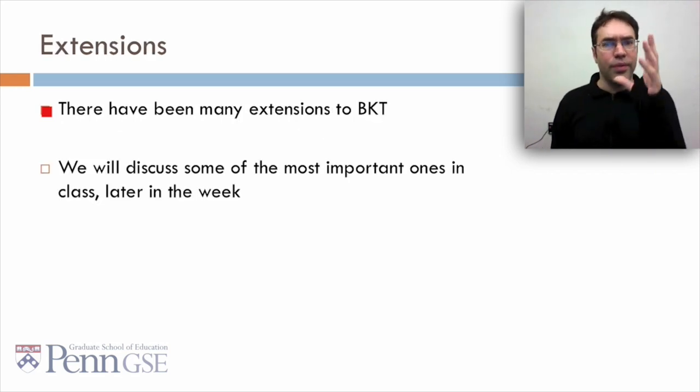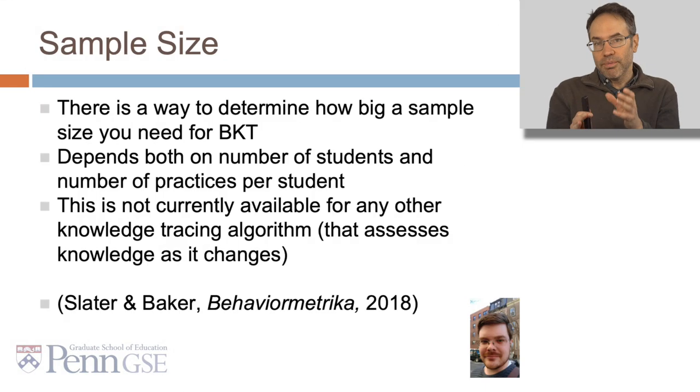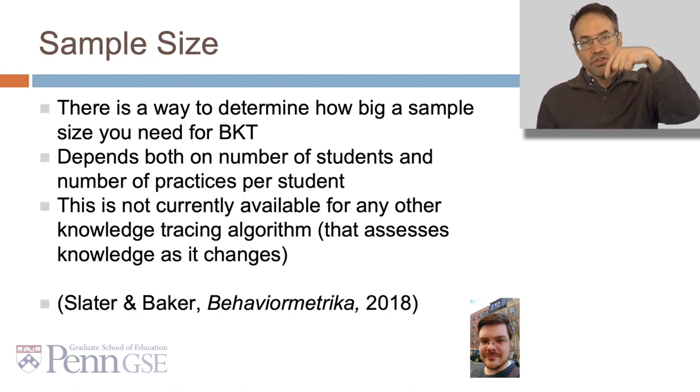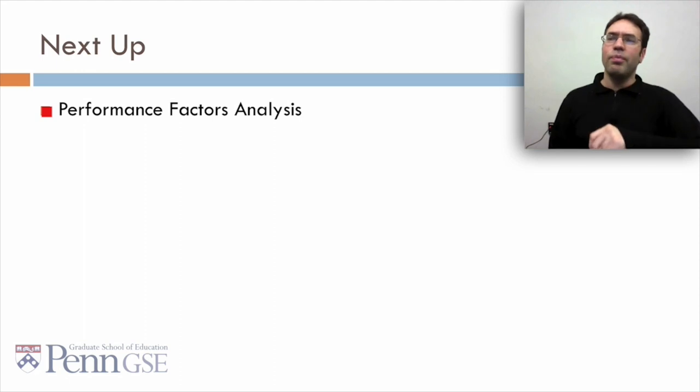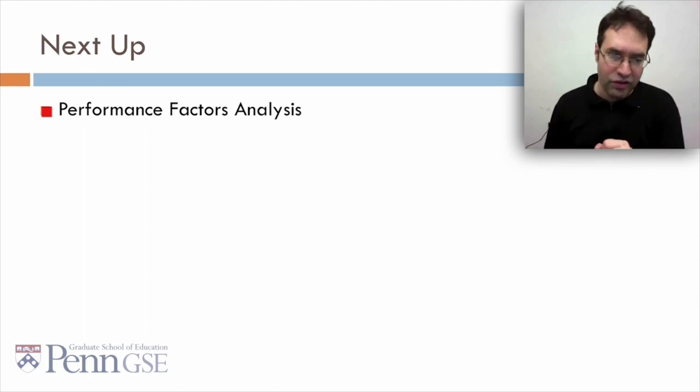I want to conclude by saying that there have been a bunch of extensions to BKT. It's not just a good model. It's also been the basis for a lot of other interesting work. We're going to discuss some of the most important ones in class later in the week. One other important note. One cool thing about BKT that the modern alternatives don't have is that there's actually a way to determine how big a sample size you need for BKT. It turns out to depend both on the number of students you have and the number of practices per student. So it's not simply that you need a certain number of students. You also need to know how much data you have per student. And this isn't currently available for any other knowledge tracing algorithm that assesses knowledge as it changes. For details on this method see Slater and Baker in Behavior Metrica in 2018. So thank you very much for coming today. Next up we'll talk about one of BKT's rivals, performance factors analysis. Thank you very much.